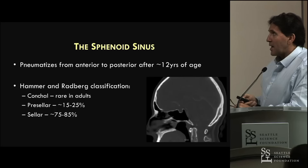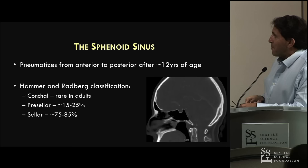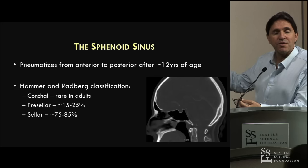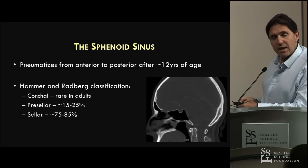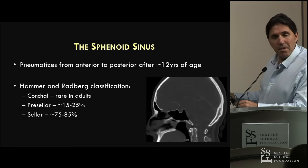Let's go to the sphenoid sinus quickly. The sphenoid sinus is typically seen post-pubertally and there's varying pneumatization. The most common is the sellar configuration where the whole sphenoid is pneumatized - you see the entire sella and the clivus when you open it up. That's the best for anterior skull base surgery because our approach is so easy. When you get a conchal configuration with very little pneumatization, that makes it much more challenging.